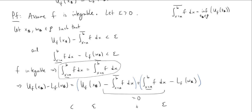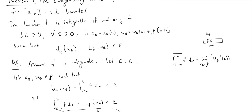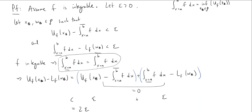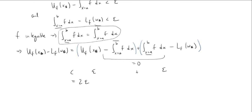Now we go back to our goal: we wanted to show that if f was integrable, then there existed a K such that the difference between U and L applied to some partitions we could find was less than K times epsilon. We missed a K — we need to put a K there. Look at what we have: the K we need is 2. So we can actually find partitions so that the difference is 2 times epsilon.